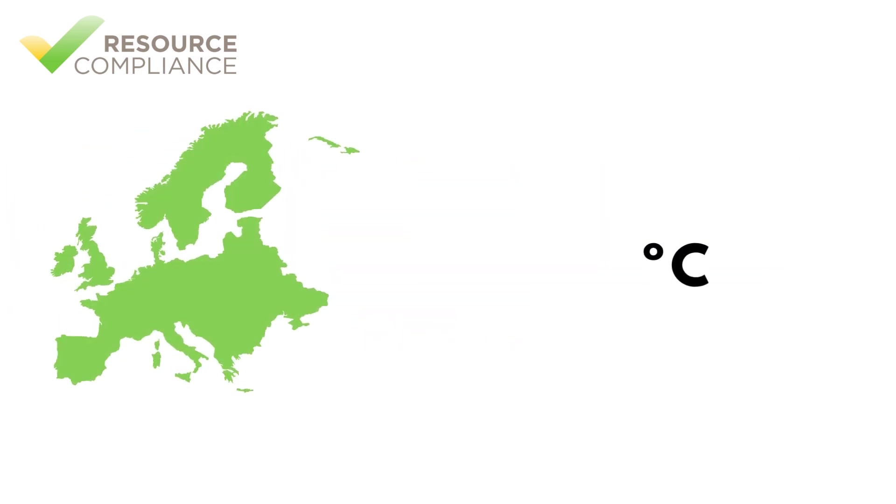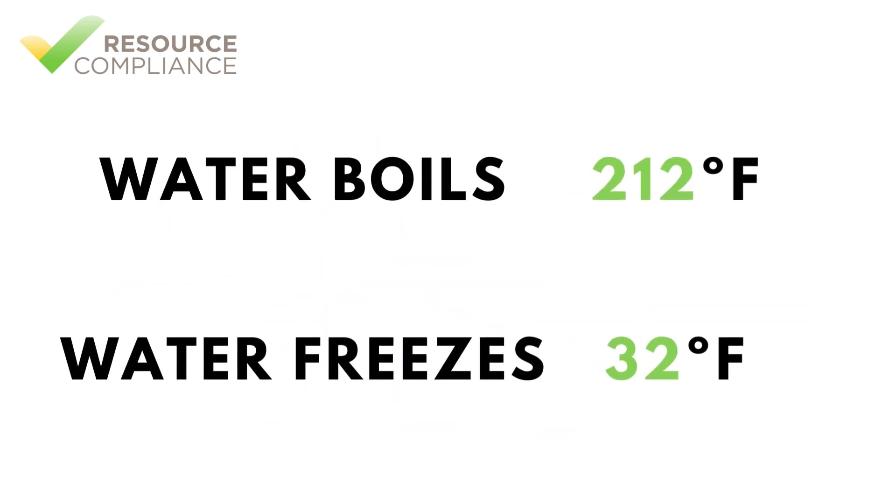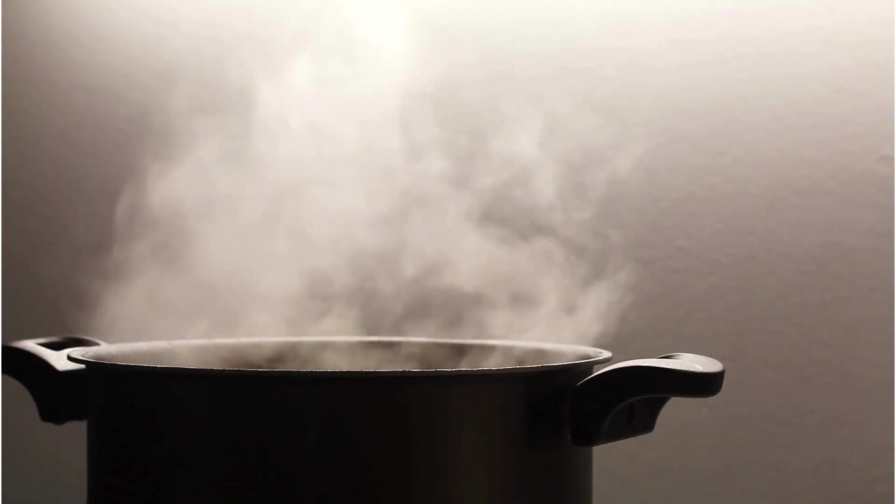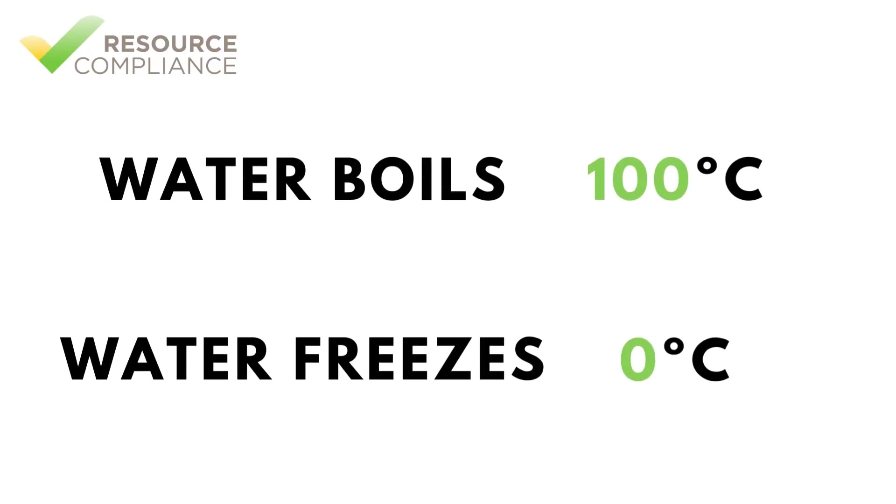In the Fahrenheit scale, water freezes at 32 degrees and boils at 212 degrees. Worded another way, the intensity of heat in water must be 212 degrees to cause steam to form. In the Celsius scale, on the other hand, water freezes at 0 degrees and boils at 100 degrees.